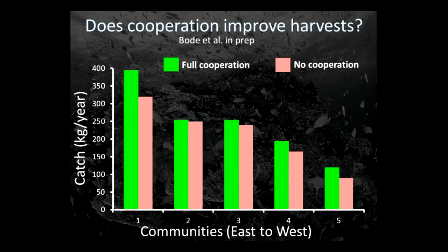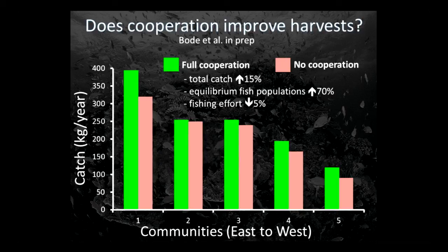Cooperation works better, actually. With catch on the y-axis in kilograms per year and communities one through five organized east to west, the green bars — cooperative management — outperform independent management. Total catch increases by 15% after equilibrium is reached, equilibrium fish populations themselves increase by 70%, and you actually don't have to fish as hard, so you get a slight decrease in effort as well.